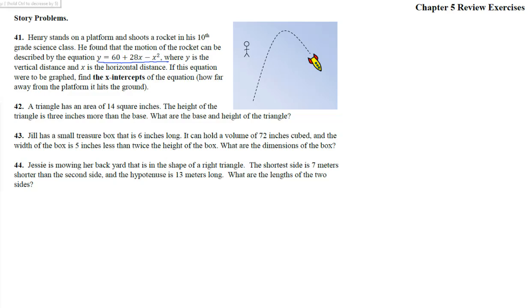Where y is the vertical distance and x is the horizontal distance. So x is here, y is up there. If this equation were to be graphed, find the x-intercepts. So if the ground is like down here and he's up on this platform, the x-intercepts are going to be here and then where the rocket hits the ground there. How far away from the platform it hits the ground? So we're looking for this guy right here. We've got to find where y is 0.